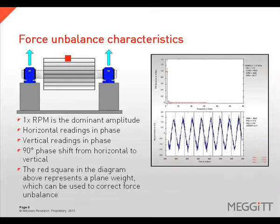Force unbalance will exhibit a dominant 1 times rotational speed amplitude. The horizontal as well as the vertical phase readings will be in phase, with a 90 degree phase shift from the horizontal measurement plane to the vertical measurement plane. This type of unbalance can be corrected with a single plane weight placement.